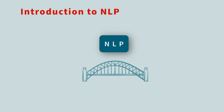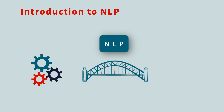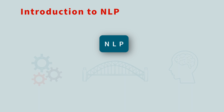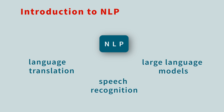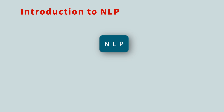NLP acts as a bridge, giving machines the ability to read, understand, and respond in a more human-like manner. NLP is used in a wide range of applications, from language translation and speech recognition, to large language models, like those powering ChatGPT. Today, we will explore a fundamental component of NLP: text preprocessing.